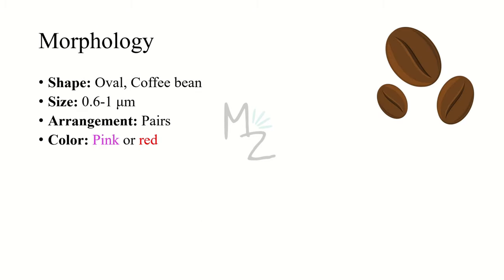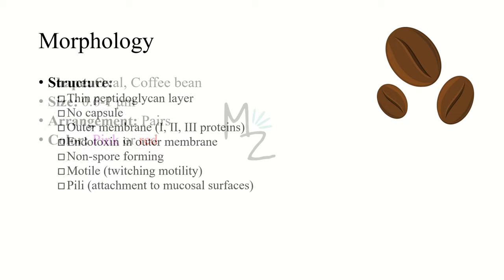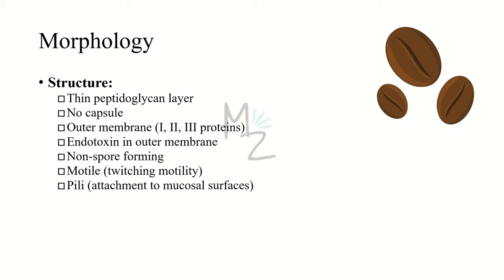Morphology: Neisseria gonorrhea is oval, kind of coffee bean shaped. It is 0.6 to 1 micrometer in size and occurs in pairs. It is pink or red in color because it is a gram-negative bacterium — it has a thin peptidoglycan layer in its cell wall, so it does not retain the dye. It has no capsule. Gonococcus has three outer membrane proteins named protein 1, 2, and 3. Protein 2 plays an important role in attachment to cells and also varies antigenically.